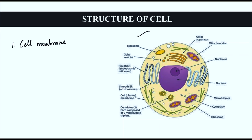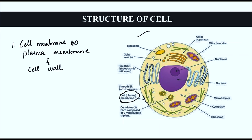The cell membrane is also called as the plasma membrane. This is the outermost covering of the cell. The cell wall is present in plant cells and is located outside the cell membrane.